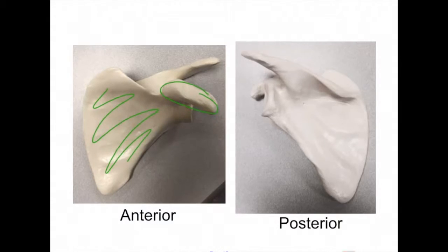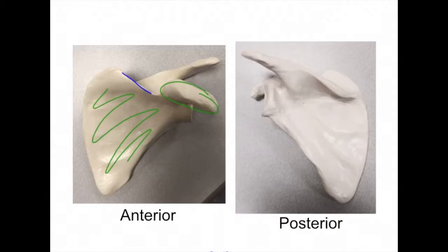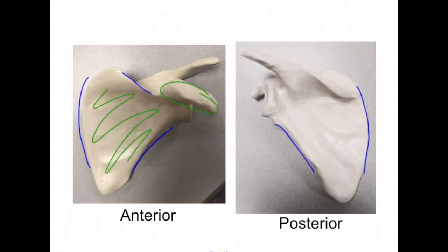On both sides, anterior and posterior, we can identify all of our borders. Here we see the superior border, the medial border, the lateral border, our inferior angle, and our superior angle.